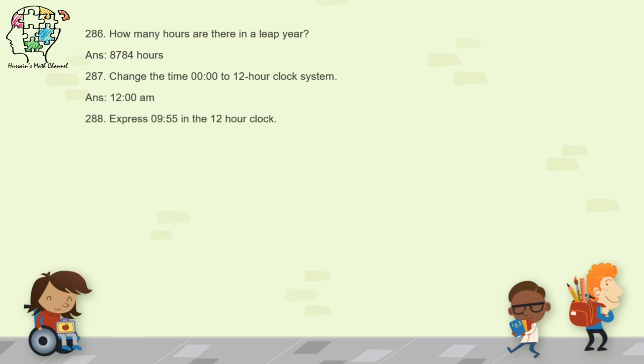Question 288: express 0955 in the 12-hour clock system. If the time is less than 12 in 24-hour notation, you only write AM with the time. So 0955 becomes 9:55 AM.